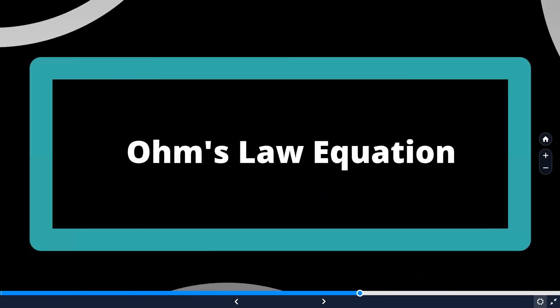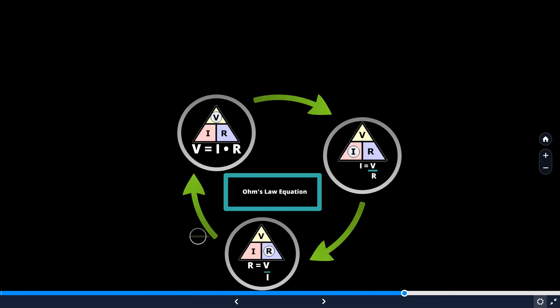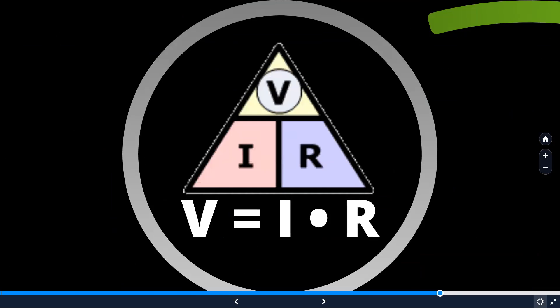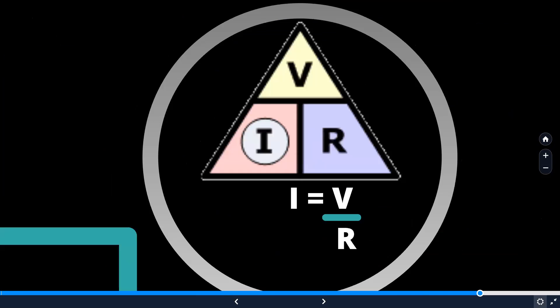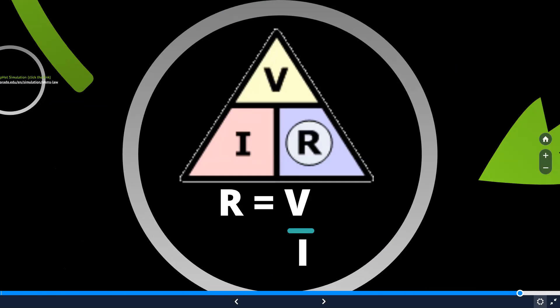Mathematical expression for Ohm's law is V is equal to I into R. Formula triangles are easy way of remembering the mathematical equations. So, by using this formula triangle, you can think or you can identify that I is equal to V by R or if V and I is given, you can find out resistance by using the formula R is equal to V by I.